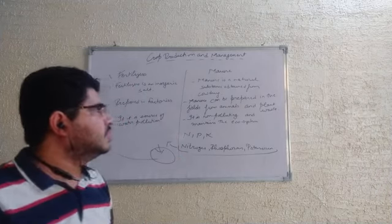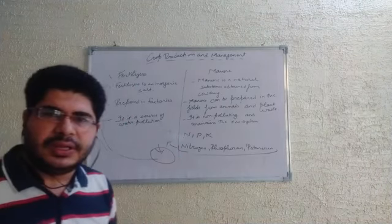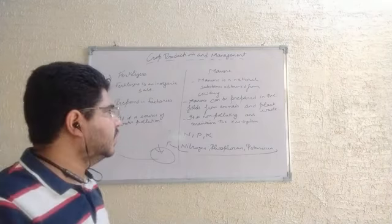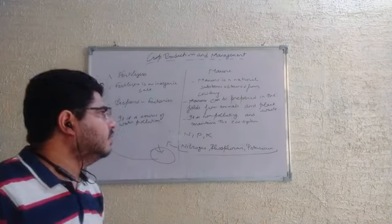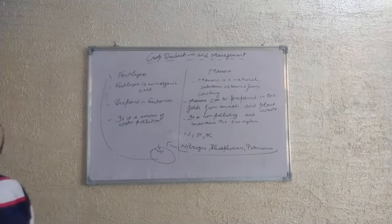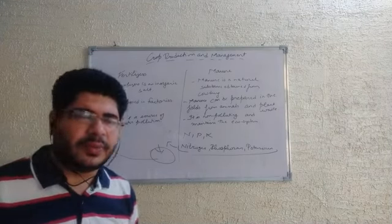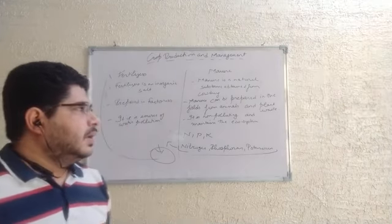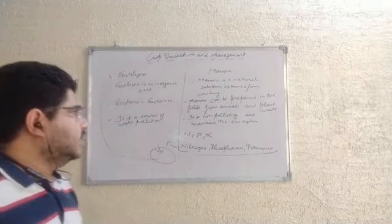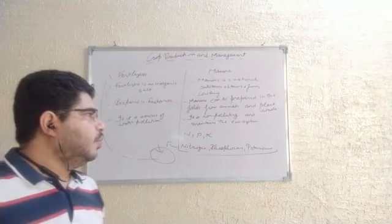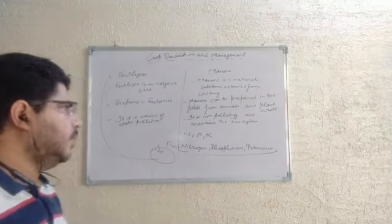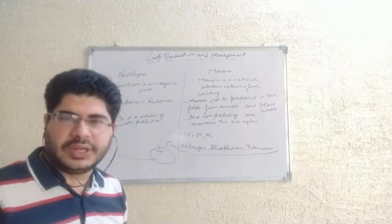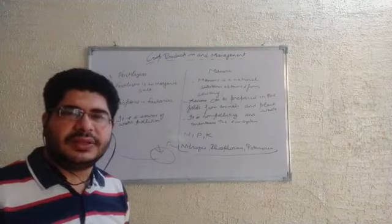Manure is a natural substance obtained from cow. It is a natural substance. Manure can be prepared from animals and plants.